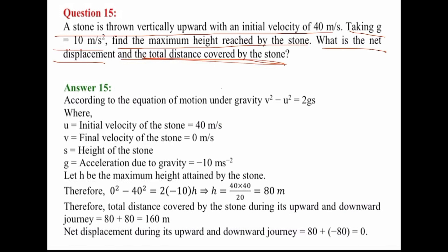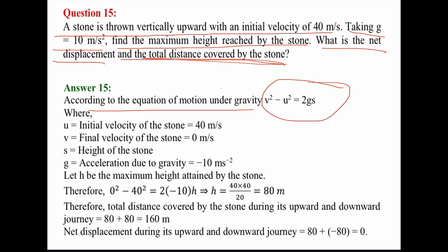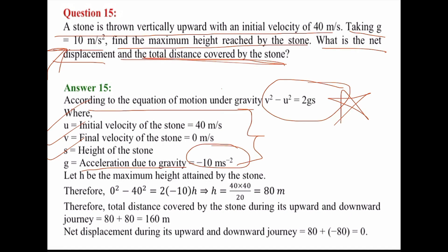We first need to find the maximum height reached by the stone. Since the stone is acting against gravity, the value of G will be taken as minus 10 meters per second squared. Again we apply the formula V squared minus U squared equals 2GS. The initial velocity U is 40 meters per second and the final velocity V at maximum height is 0 meters per second.